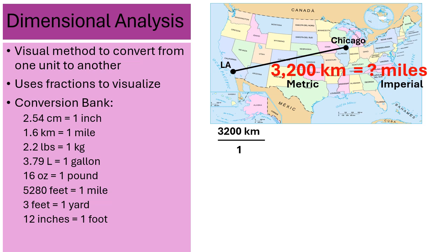The benefit is I can see that 3,200 kilometers is in the numerator position. With dimensional analysis, my next step is a multiply sign and a division bar. We're going to try to cross-cancel kilometers because I want my final answer in miles. Kilometers is currently in the numerator position on the left, so on the right side I'm going to place it in the denominator position. I want miles in the numerator. The conversion is 1.6 kilometers equals 1 mile — wherever the kilometer is, that's where the 1.6 goes, so 1.6 goes in the denominator.